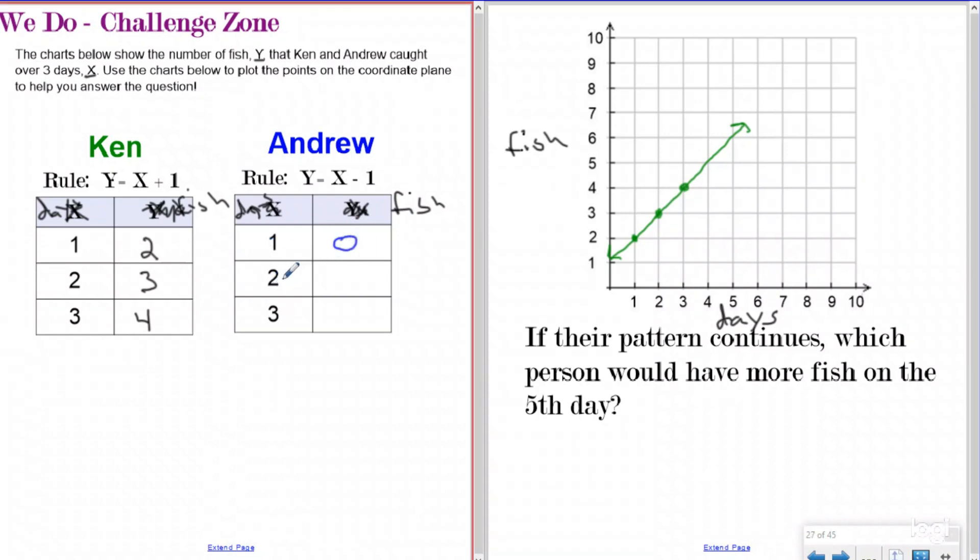On the second day, plugging in two for X, two minus one is one. Y would equal one. And on the third day, three minus one would be two. So Y would equal two. So on the third day, he caught two fish. On the second day, he caught one fish. And on the first day, he caught zero fish.